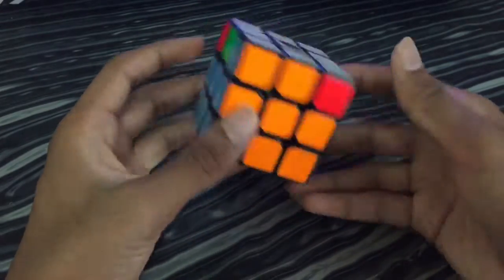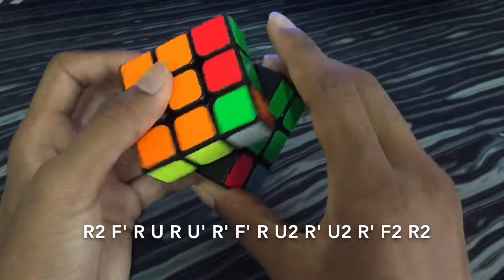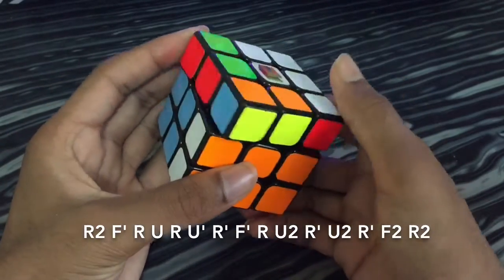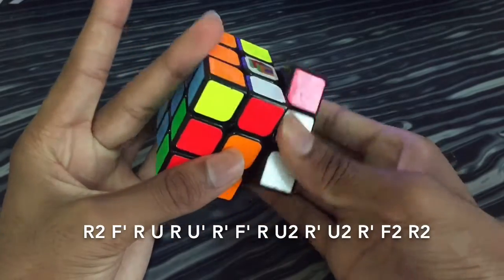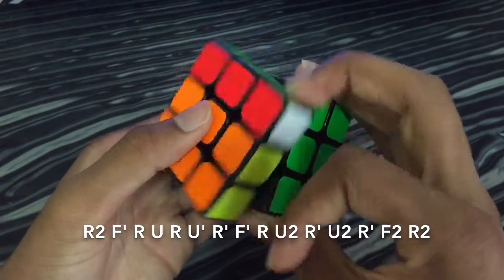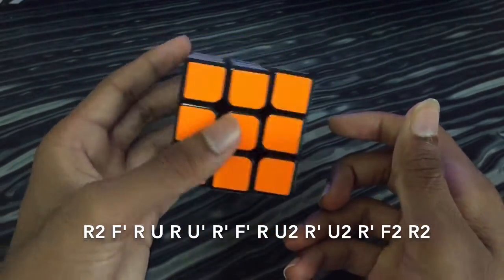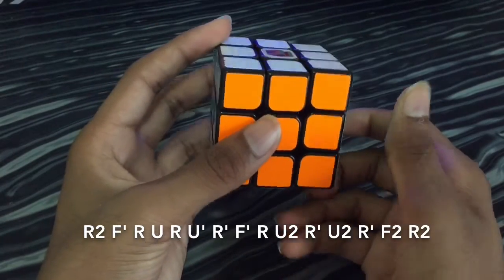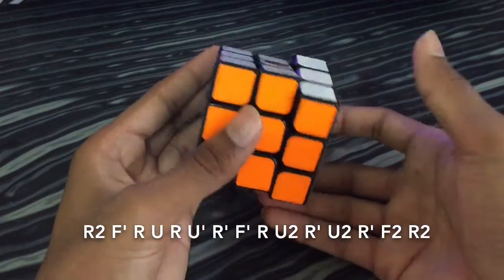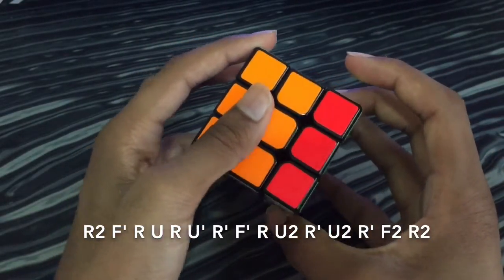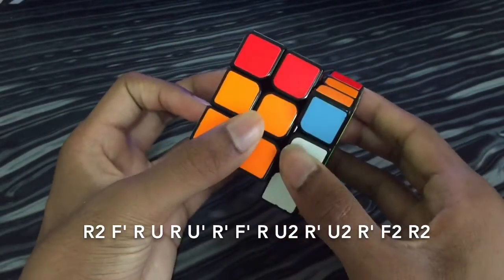So this is it. What you do is an R2 with an overgrip, and then an F prime with your index finger of the other hand.